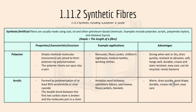Moving on to 1.11.2 synthetic fibers — synthetic or artificial fibers are usually made from coal, oil, and other petroleum-based chemicals. Examples include polyester, acrylic, and nylon. The staple refers to the length of a fiber. For polyester, the properties include that simple chemical molecules called monomers are joined together to form polymers by polymerization.